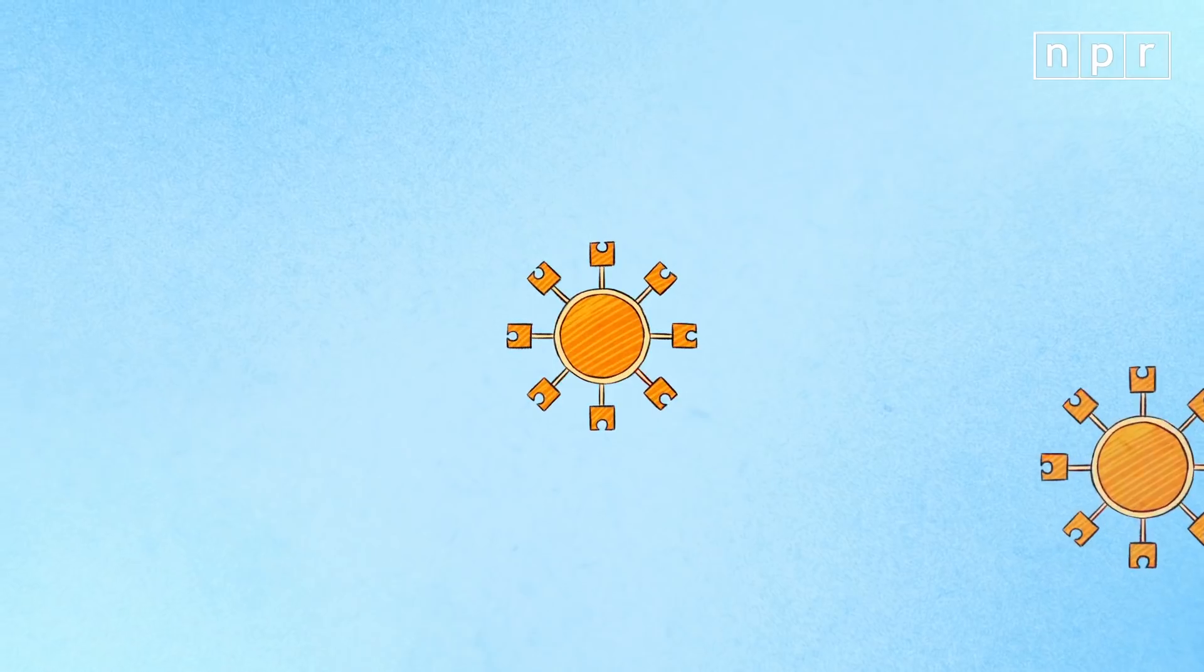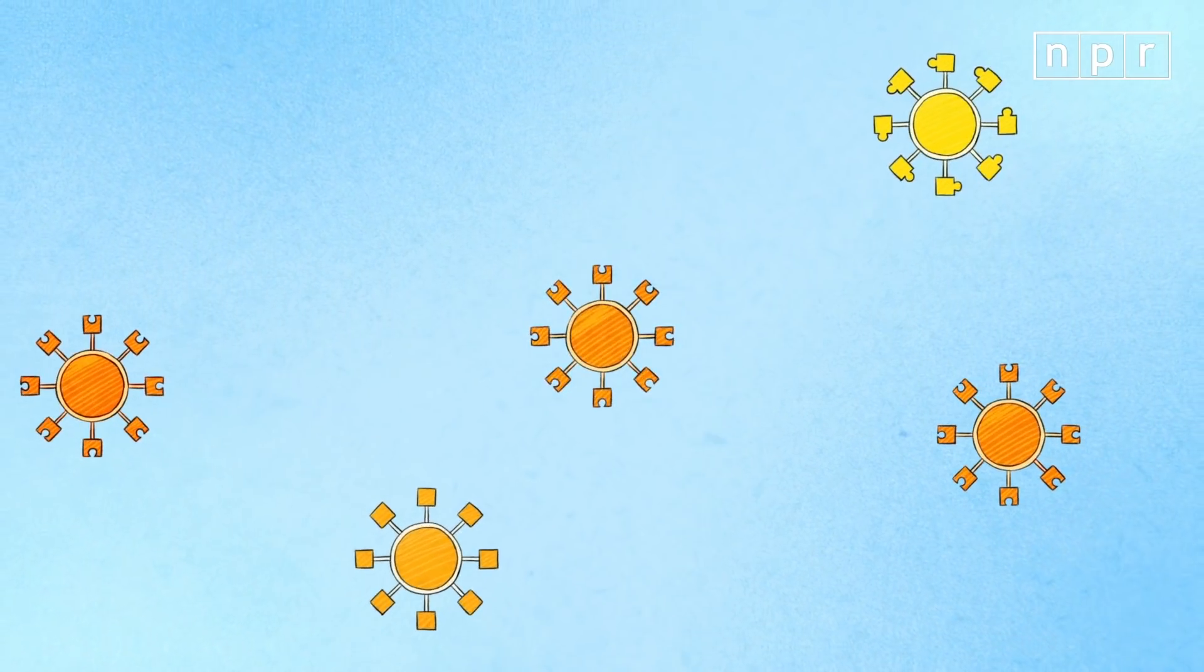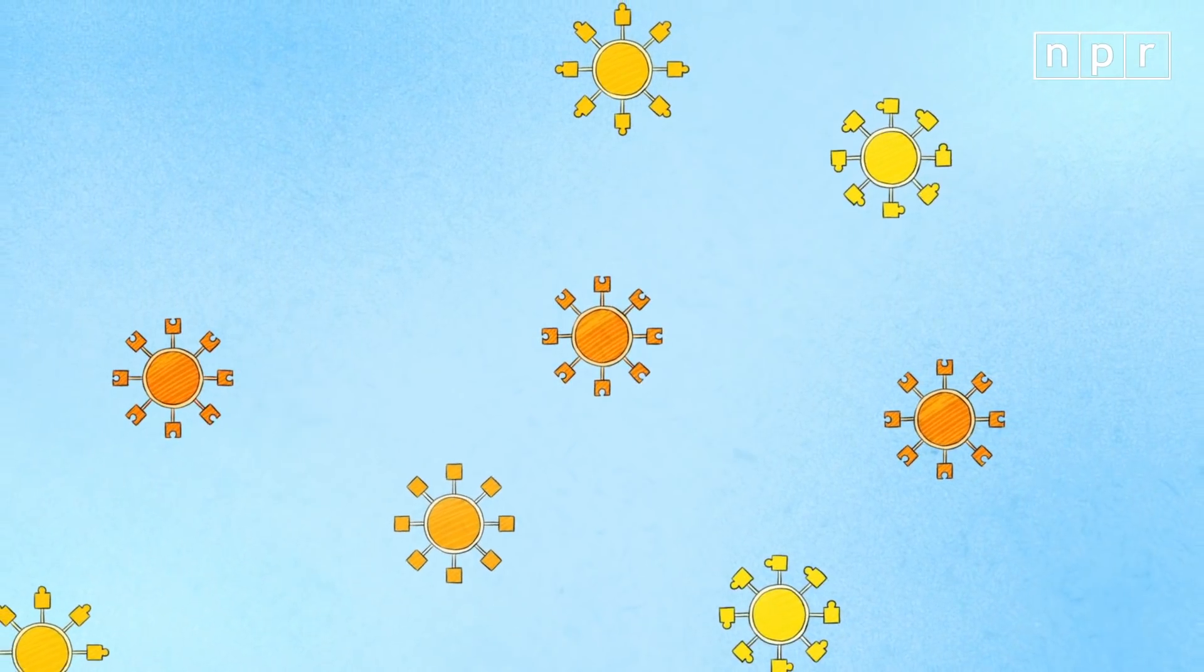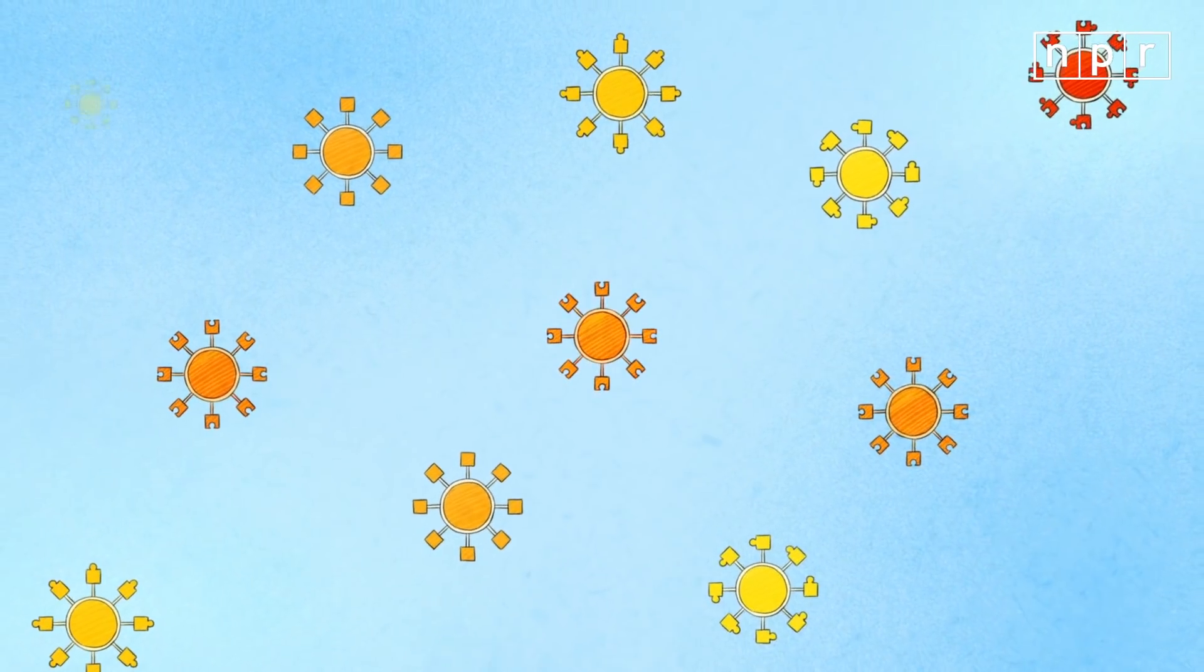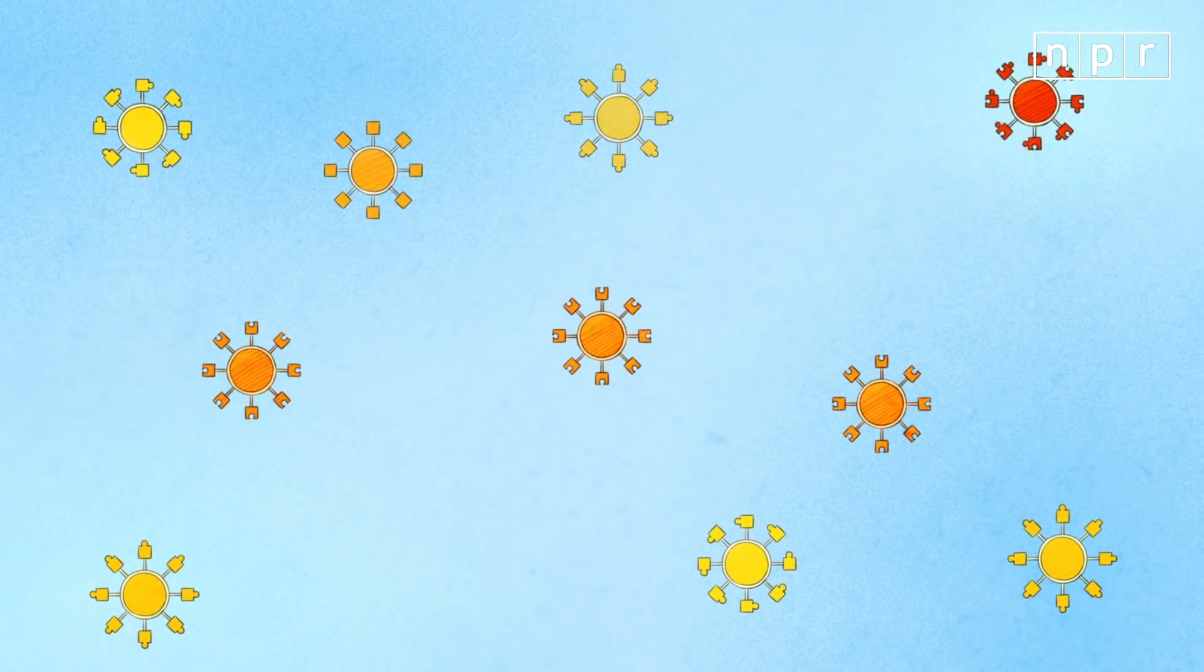Every time the virus copies itself inside a cell, it has the chance of mutating or changing its genes slightly. Most of the mutations are actually harmful to the virus. They disable it, so these mutations disappear.